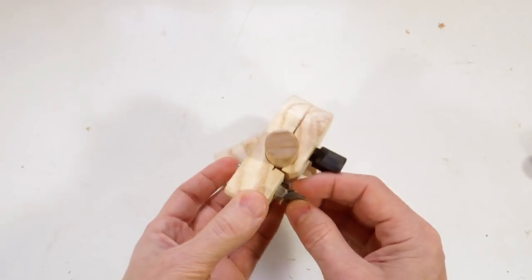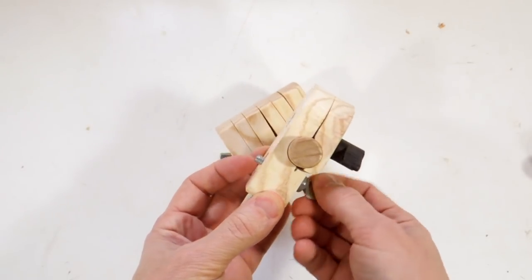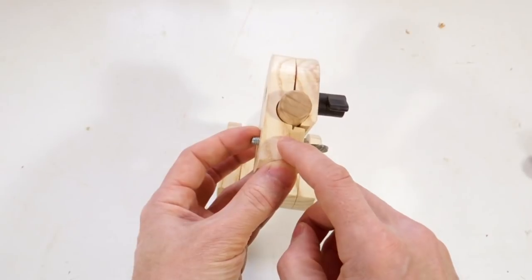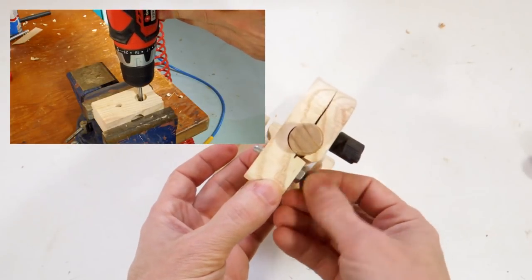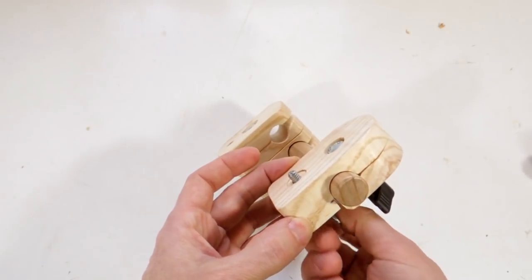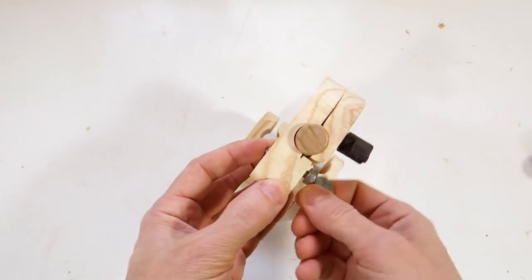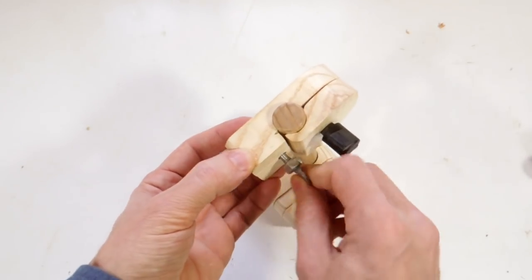And this screw here is captive in here. I ground the threads off the middle part, and then part of this block in here is threaded. So I can turn this screw freely. And if I want to remove it, I just have to turn it through the threads in the block to get it out.